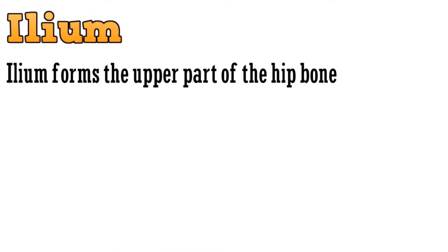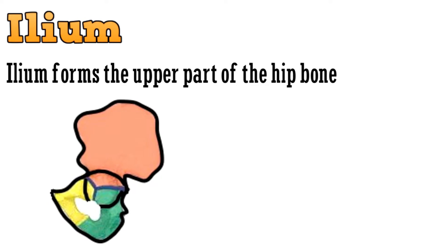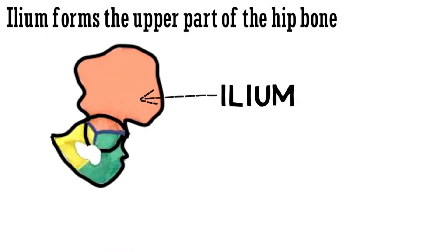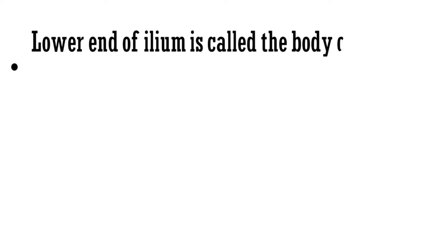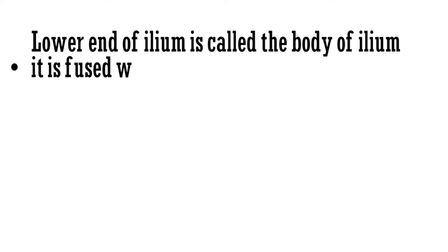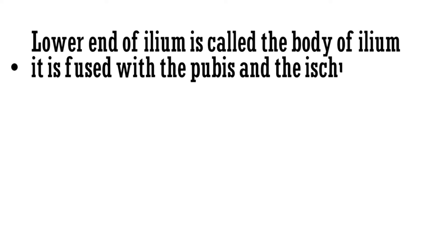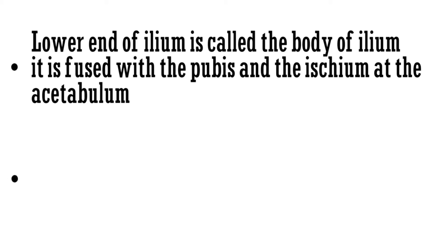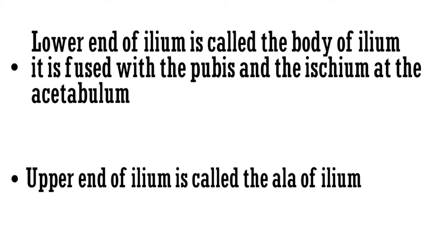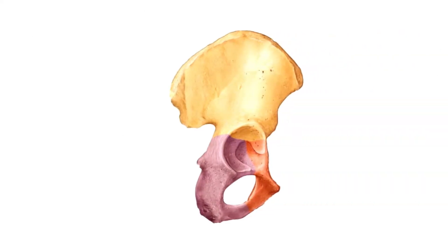Coming to the first part, the ilium. The ilium forms the upper part of the hip bone. The lower end of the ilium is called the body of ilium; it is fused with the pubis and the ischium at the acetabulum. The upper end of the ilium is called the ala of ilium.